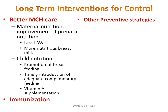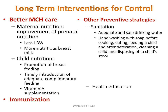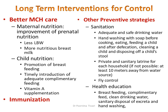Other preventive strategies include sanitation and health education: adequate and safe drinking water, hand washing with soap before cooking, before eating, before feeding a child, after defecation, after cleaning a child, and after disposing of a child's stools. A private and sanitary latrine for each household is recommended; if not possible, it should be at least 10 meters away from the drinking water source. Health education regarding breastfeeding, complementary feeding, and clean drinking water is essential, as knowledge is the best prevention.